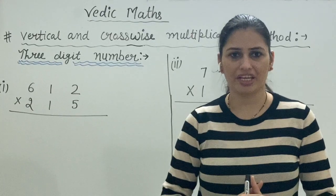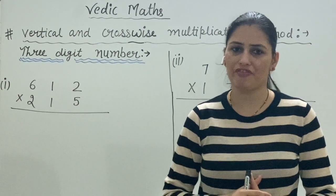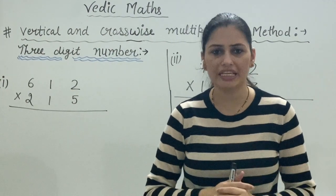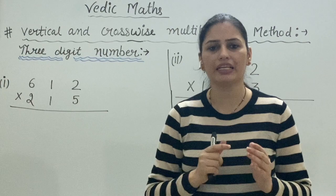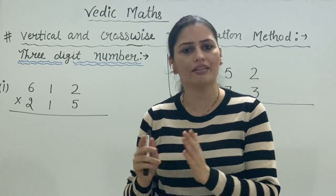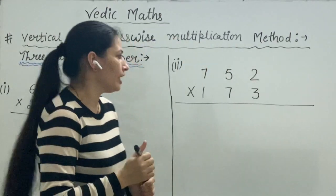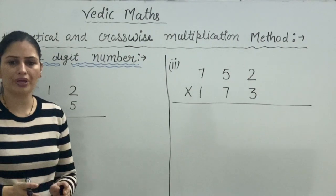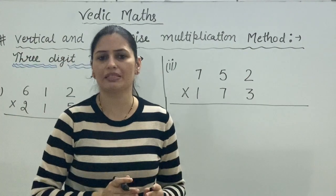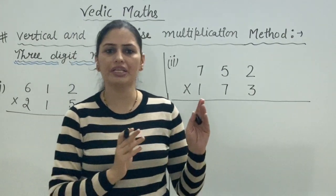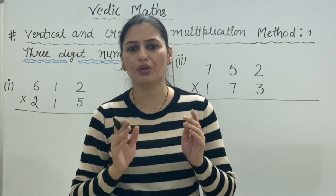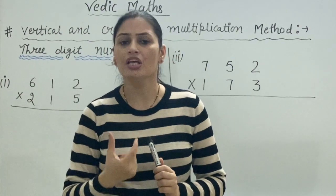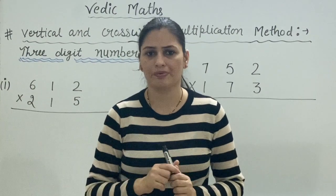Hello everyone, welcome back to our channel. Today's trick is the vertically and crosswise method for three-digit numbers. We will use the same trick, but here we will multiply a three-digit number by a three-digit number. In the two-digit case, we did crosswise multiplication only once, but here with three-digit numbers, we will do crosswise multiplication three times.